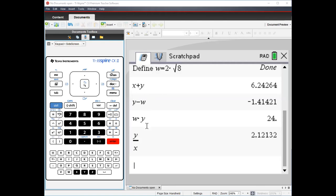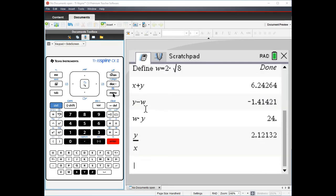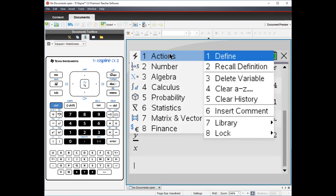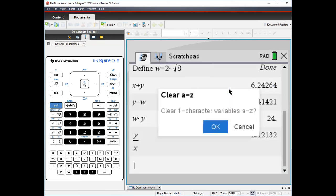Hopefully that gives you a sense of the power of the define function. Let me show you one last thing. Since we've defined all these functions, we might want to clear them out so we can do this again on a separate problem. I'm going to go to menu, then actions. Delete variable is if I wanted to delete a single variable. Clear A to Z will clear character variables A through Z.